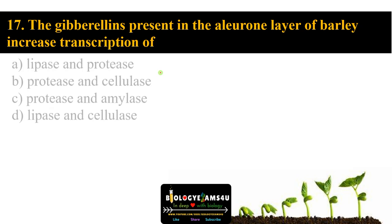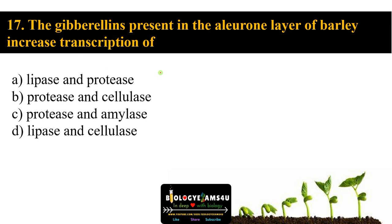Question number seventeen: the gibberellins present in the aleurone layer of barley increase transcription of option A lipase and protease, option B protease and cellulase, option C protease and amylase, option D lipase and cellulase. The answer is protease and amylase — option C.